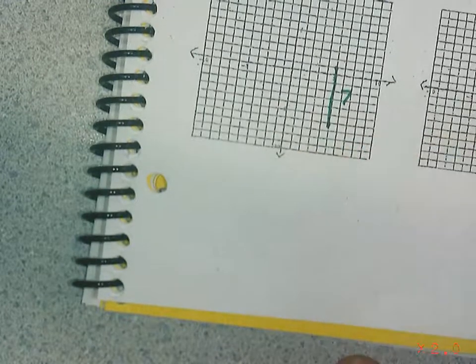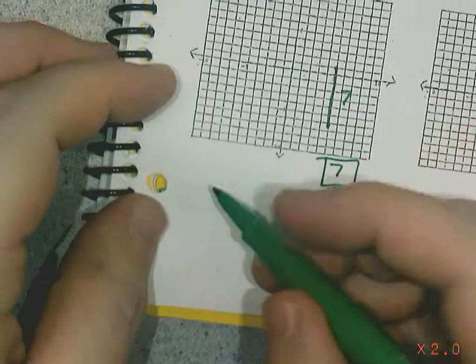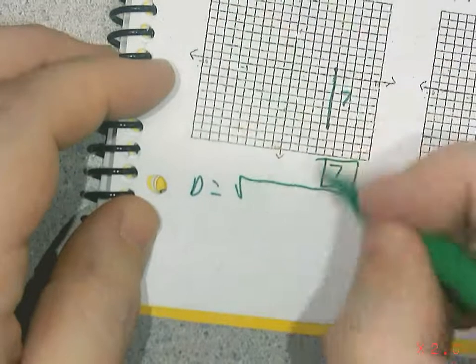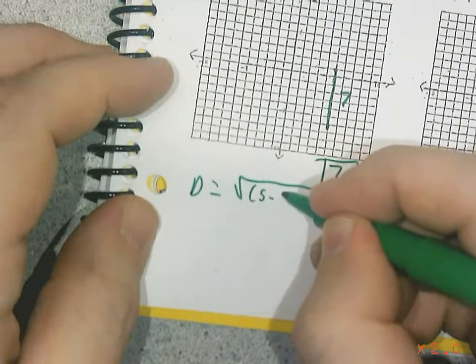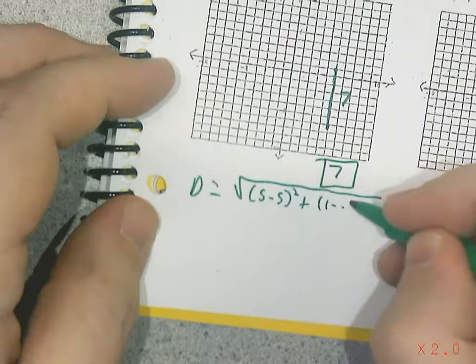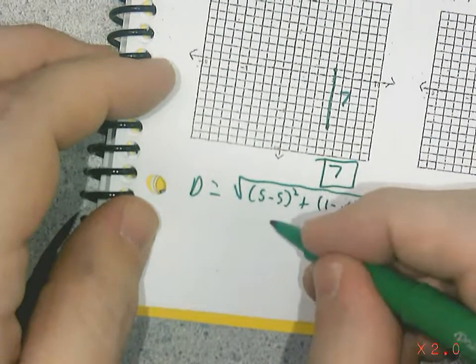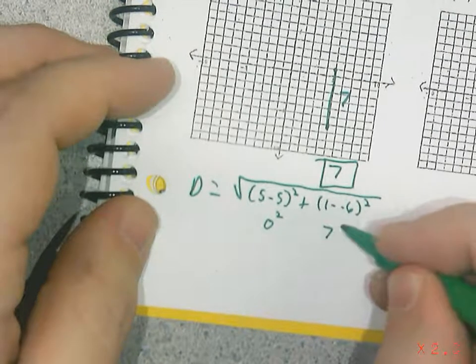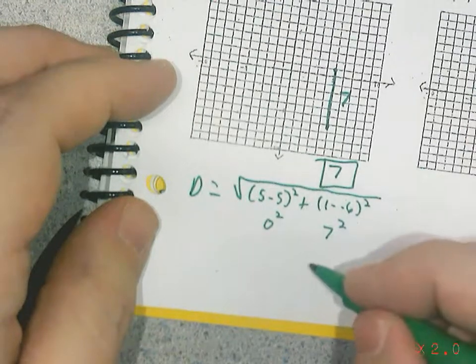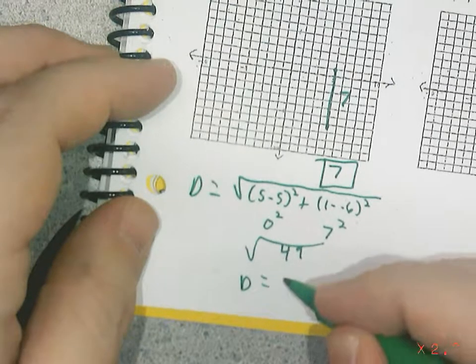But let's double check this with the distance formula. So distance equals square root difference in my x-coordinate. So five minus five squared plus difference in my y-coordinate. So one minus a negative six squared. So five minus five is zero. Zero squared. One minus a negative six is seven squared. Zero squared is zero. Seven squared is 49. Square root of 49, distance is going to be seven.